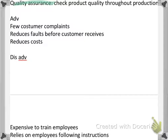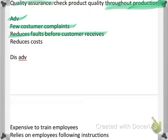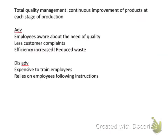The second method is quality assurance. This involves checking product quality throughout the production process — not just at the end. The advantages are that there will be fewer customer complaints, it reduces faults before the customer receives the product, and it reduces costs. The disadvantage is that it is expensive to train employees, and it relies on employees following instructions correctly.